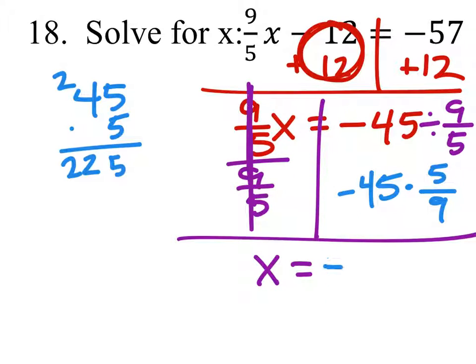So, it's negative 225 over 9, but as it turns out, both of these are divisible by 9.